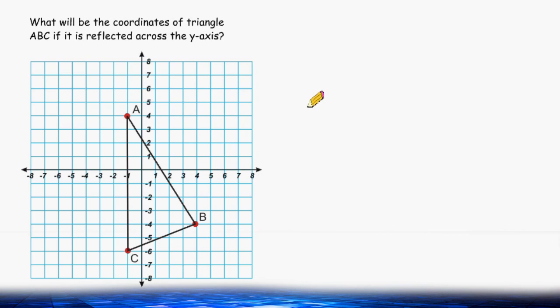What we have to do with this problem is determine what the coordinates of triangle ABC will be if we reflect it across the y-axis. And the y-axis is located right here. So what we have to do is flip or reflect each one of these points across this line.